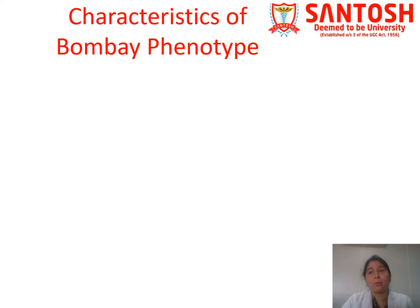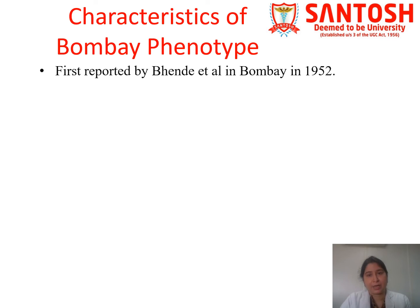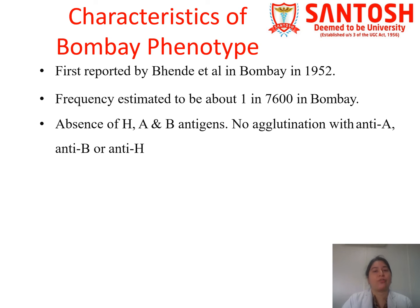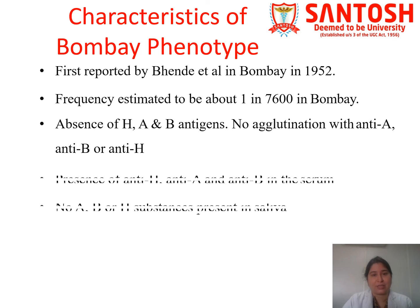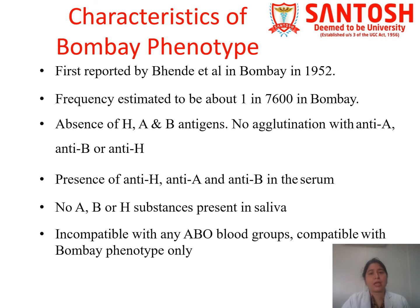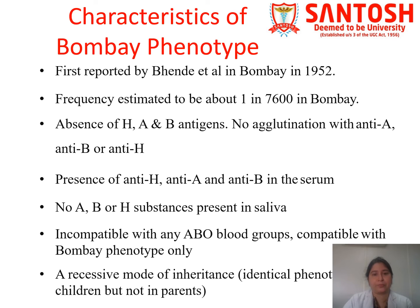Bombay phenotype was first reported by Bhende et al. in Bombay in 1952, with an estimated frequency of about 1 in 7,600. Its characteristics include absence of H, A, and B antigens, with no agglutination with anti-A, anti-B, or anti-H lectin. Their serum contains anti-H, anti-A, and anti-B antibodies, and there is no A, B, or H substance present in their saliva — no secretor status.